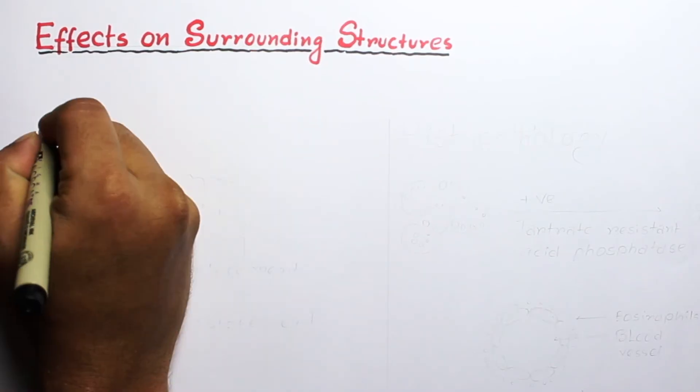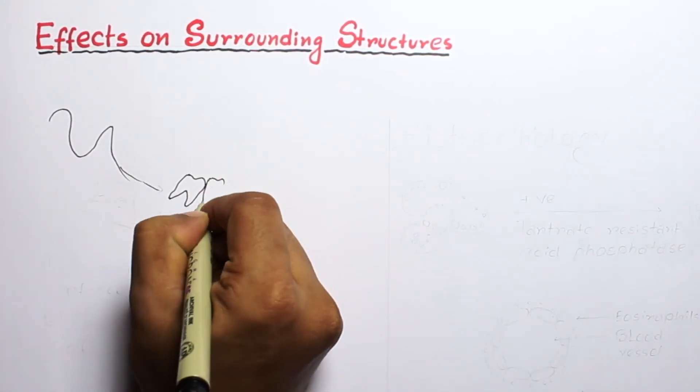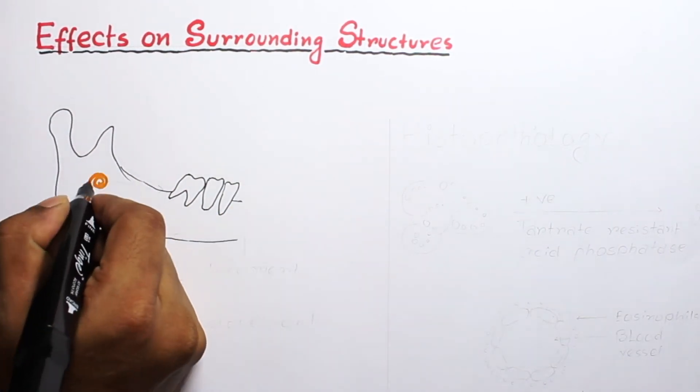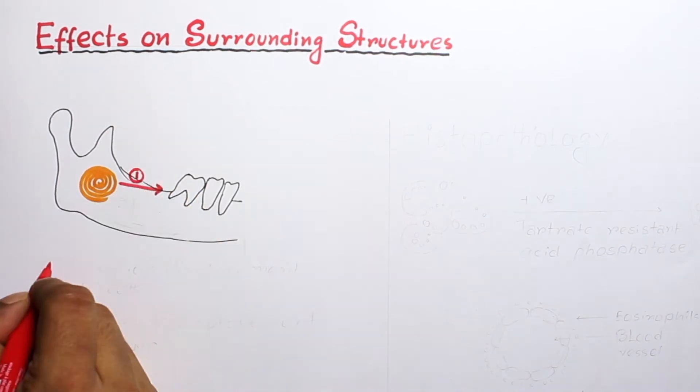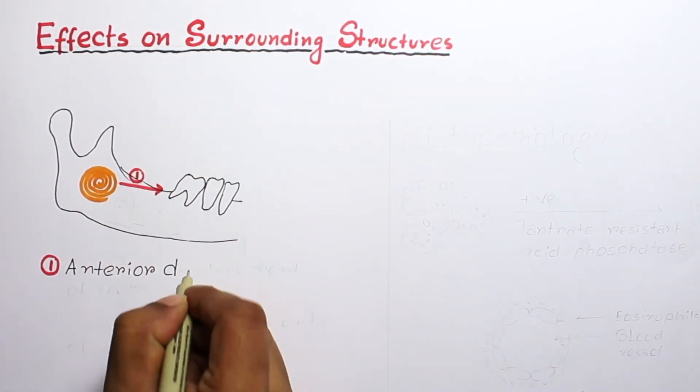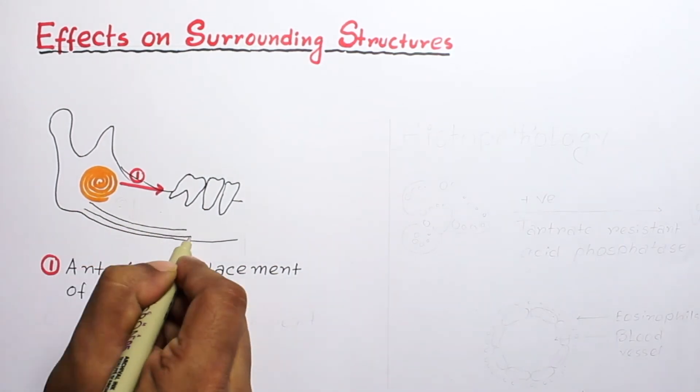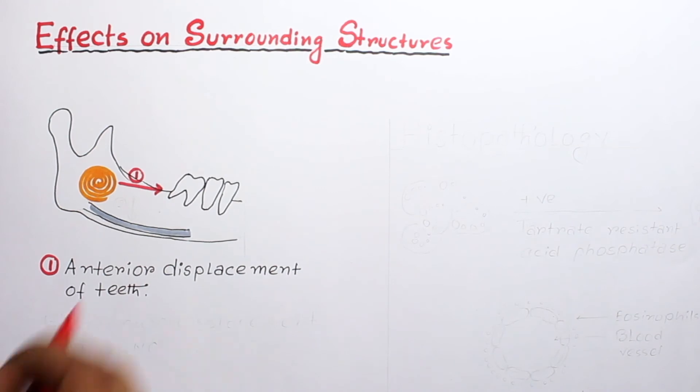Now effects on surrounding structures. Because the epicenter is in the posterior aspect of the jaws, you can see the teeth are displaced in anterior direction, and sometimes the lesion can cause inferior displacement of the inferior alveolar nerve canal.